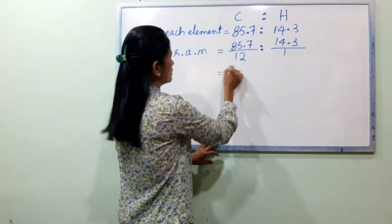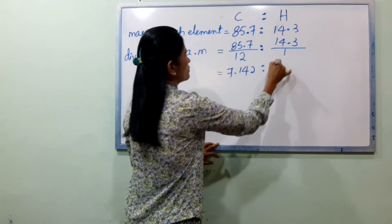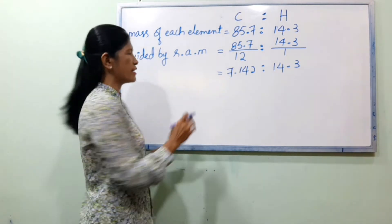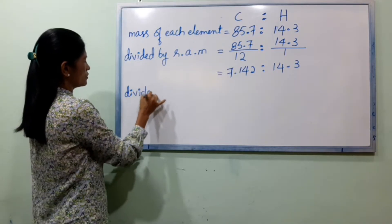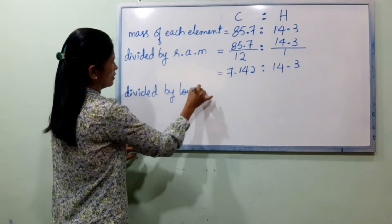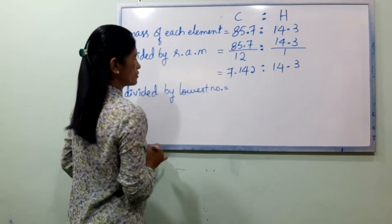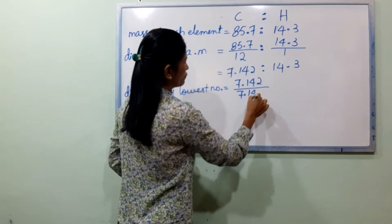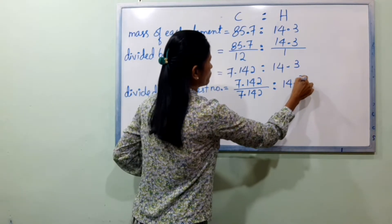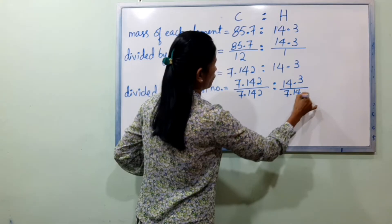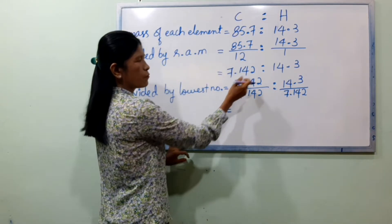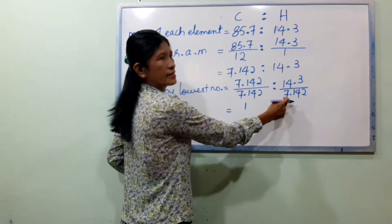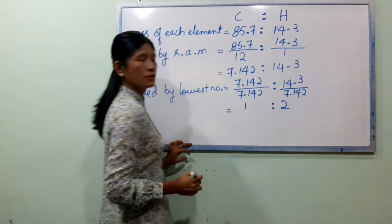Carbon: 85.7 divided by atomic mass 12 gives 7.142. Hydrogen: 14.3 divided by atomic mass 1 gives 14.3. Now divide by the lowest number to get the ratio.